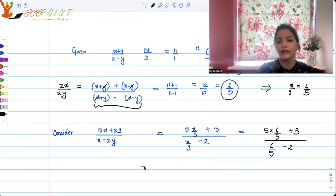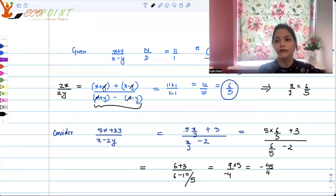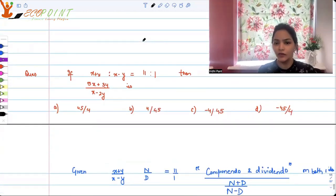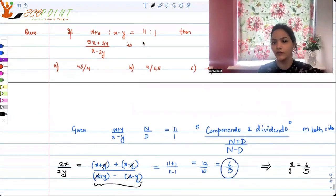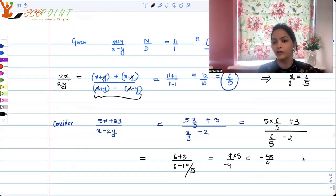So we are getting here, 6 plus 3 upon 6 minus 10 by 5. So that is 9 upon minus 4 by 5. So 5 goes here. So it's 45 upon 4 with a minus sign, which definitely is one of the options. Yes, it is option D minus 45 upon 4. So it's option D.